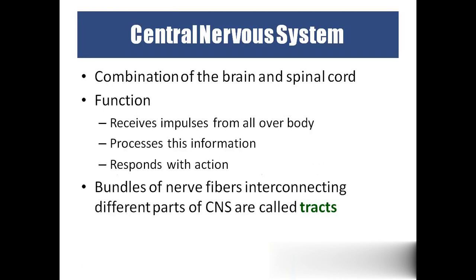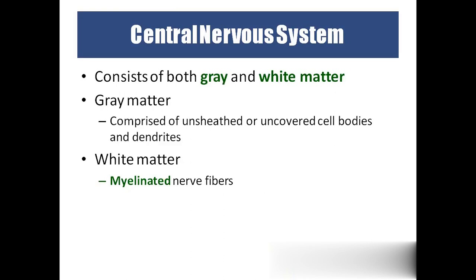The central nervous system means brain and spinal cord. The brain receives impulses from all over the body, processes the information, and responds to action. If we receive sensory input, we process the sensation and react accordingly. The CNS consists of two things: grey matter, which contains cell bodies and dendrites, and white matter, which contains axons. The white matter is white because of the myelin sheath, which is a fatty covering.